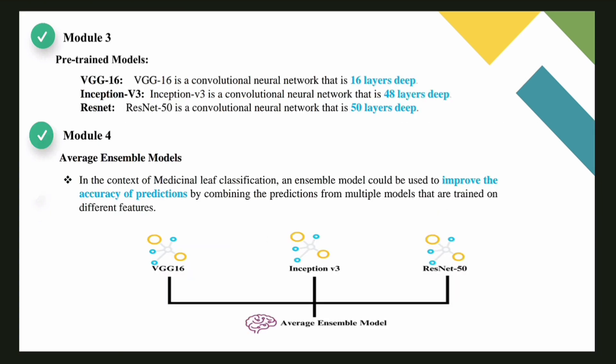Module 3 contains pre-trained models. Pre-training allows models to be optimized quickly. We use three pre-trained models, namely VGG16, Inception V3, and ResNet — all convolutional neural networks — where VGG16 is 16 layers deep, Inception V3 is 48 layers deep, and ResNet is 50 layers deep. Each model gives different prediction accuracy, so we use an average ensemble model as Module 4.